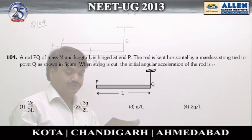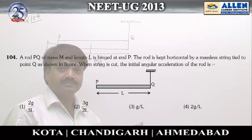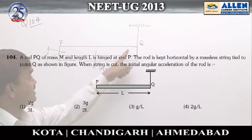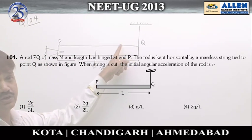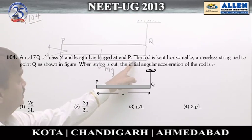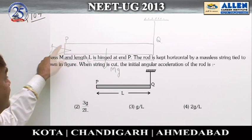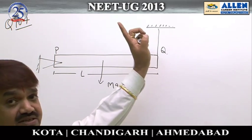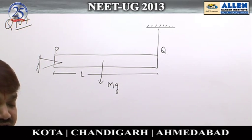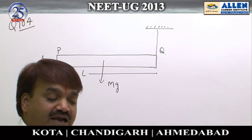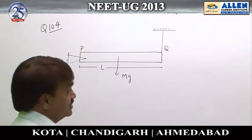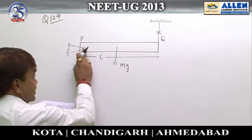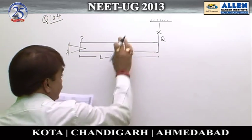Question number 104, paper code Y. According to the question, a rod of mass M and length L has one end hinged and the other end supported by a massless string. When the string is cut, we need to find the initial angular acceleration of the rod. When the string is cut, the rod rotates about the hinge support due to its weight mg.